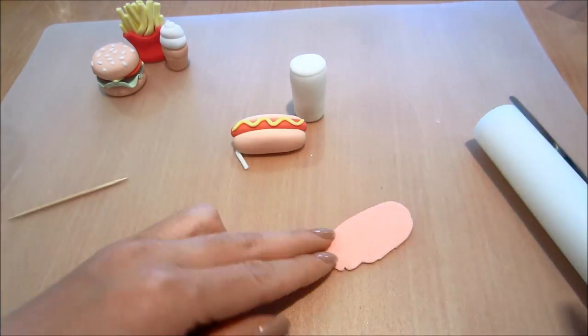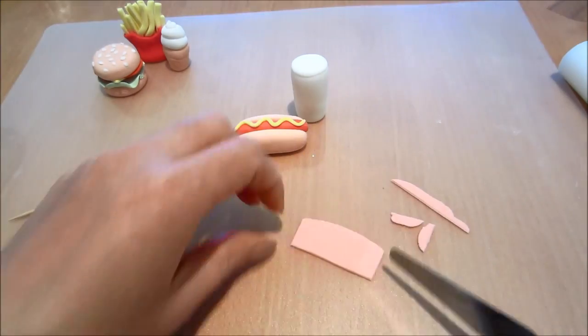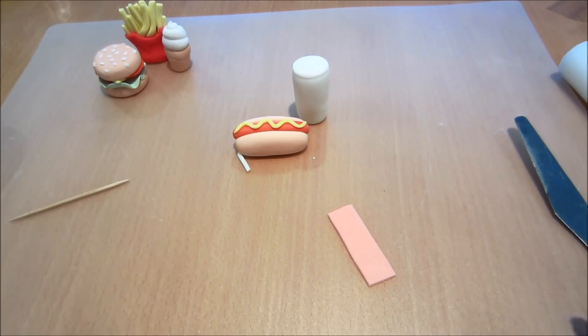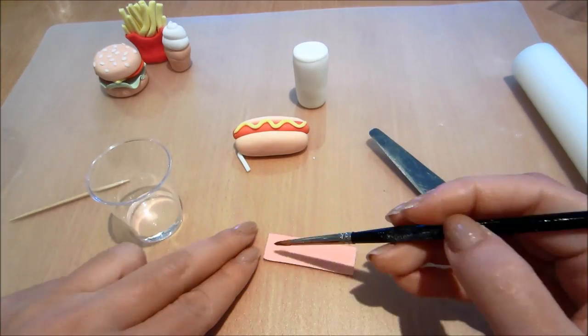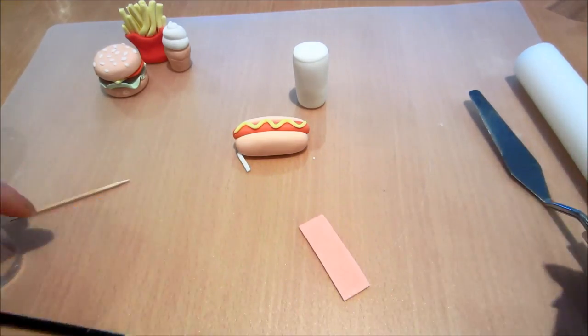And onto the label of the drink. I've rolled out a very thin section of orange fondant and I've cut it into a rectangle. And gluing it onto the drink bottle.